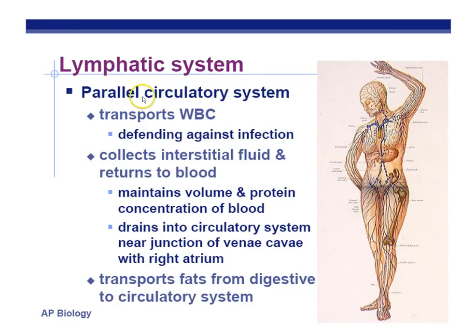Lymphatic system — a parallel circulatory system. It's a secondary system of tubes returning interstitial fluid back to your circulatory system. It's also for transporting white blood cells, or WBCs — the cops of your body that defend against infection, which we'll learn about in more detail in a different chapter. Interstitial fluid mainly comes back to the circulatory system via the higher osmotic pressure on the vein side. However, about 15% still needs to be returned back to the circulatory system.